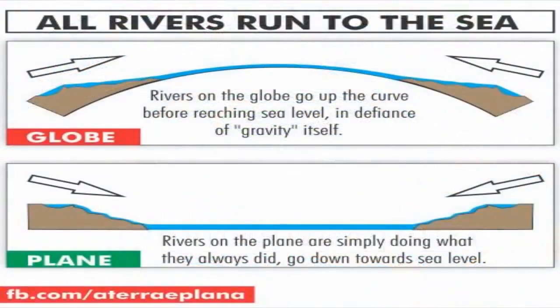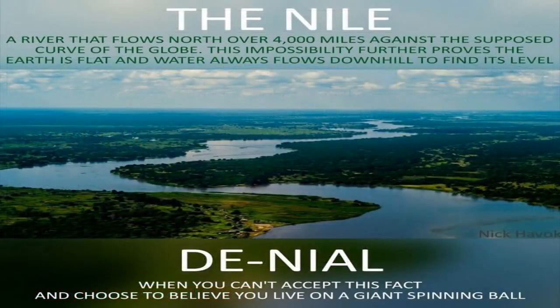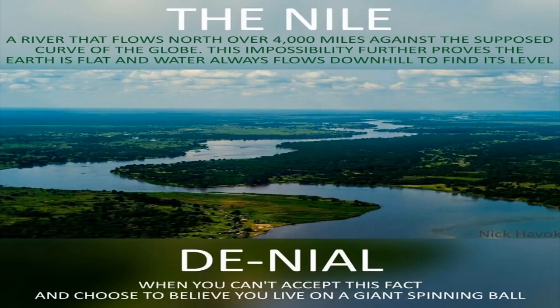Likewise, earth's many hundreds of rivers are constantly flowing north, south, east, west, and every other intermediary direction simultaneously, some of which flow for hundreds of miles with only the slightest of change in elevation. An absolute impossibility on a globe of given proportions.